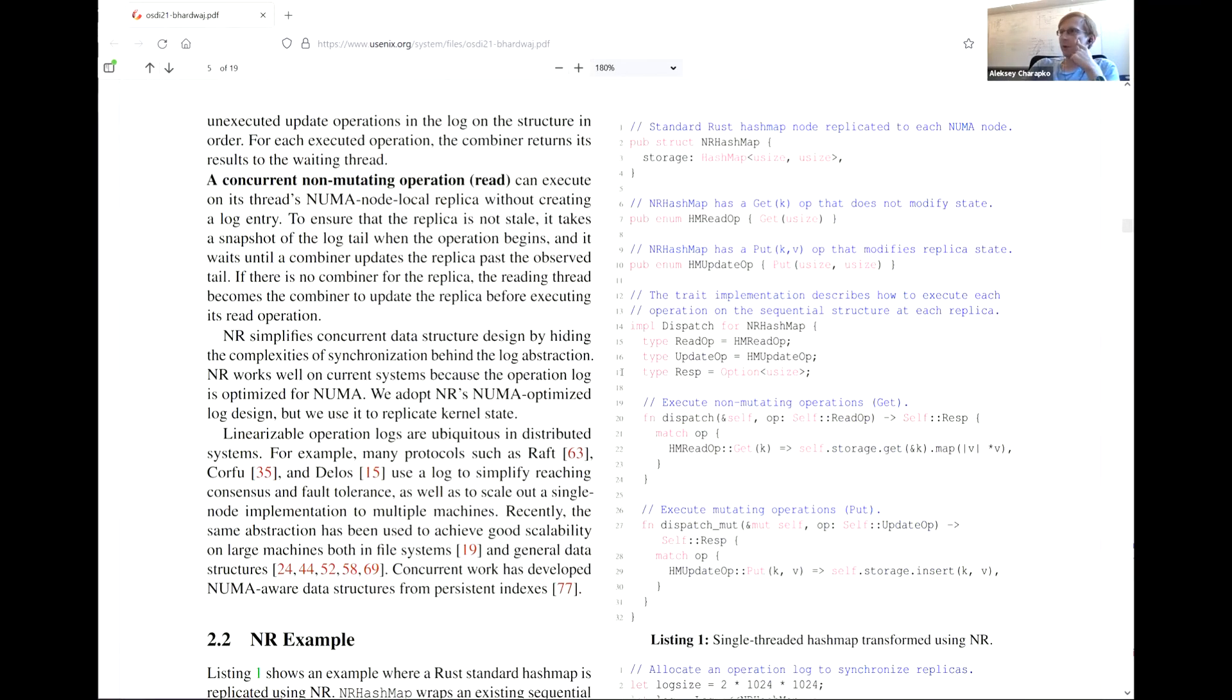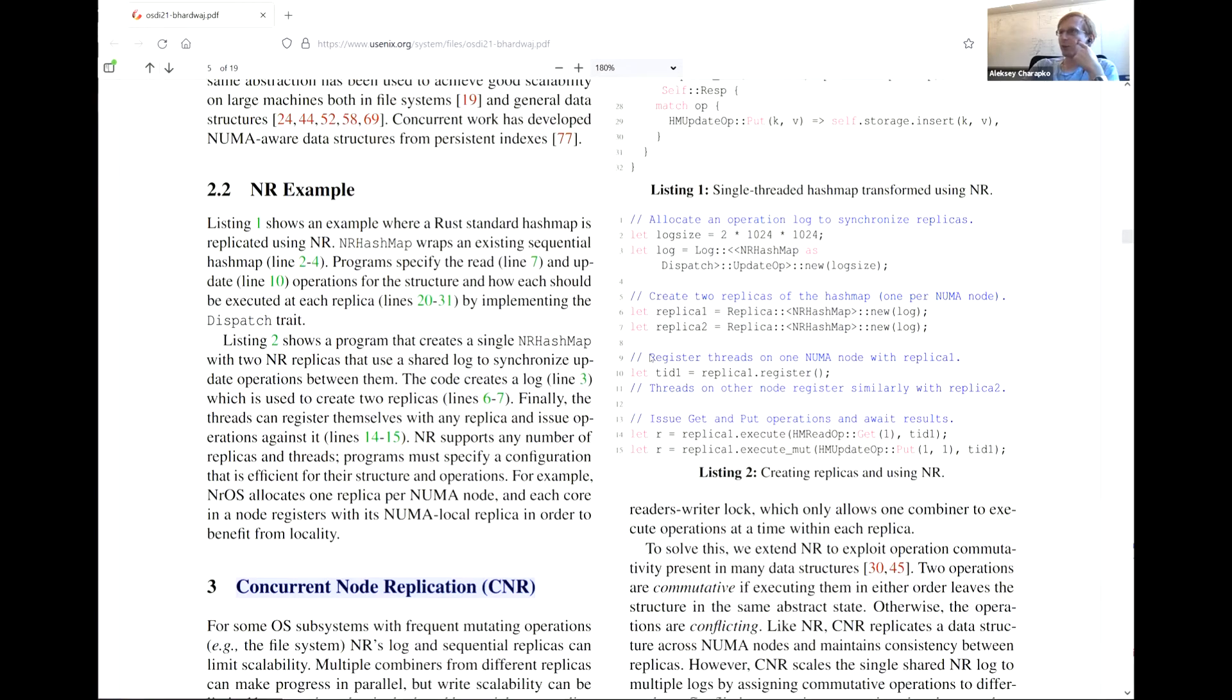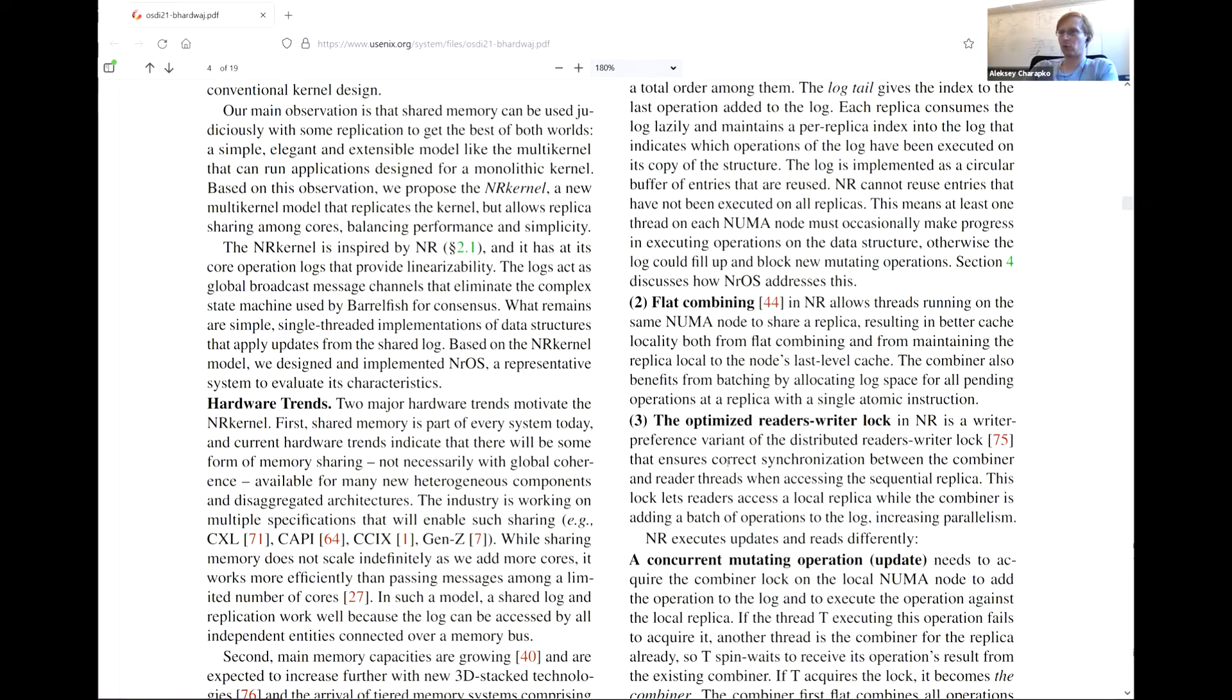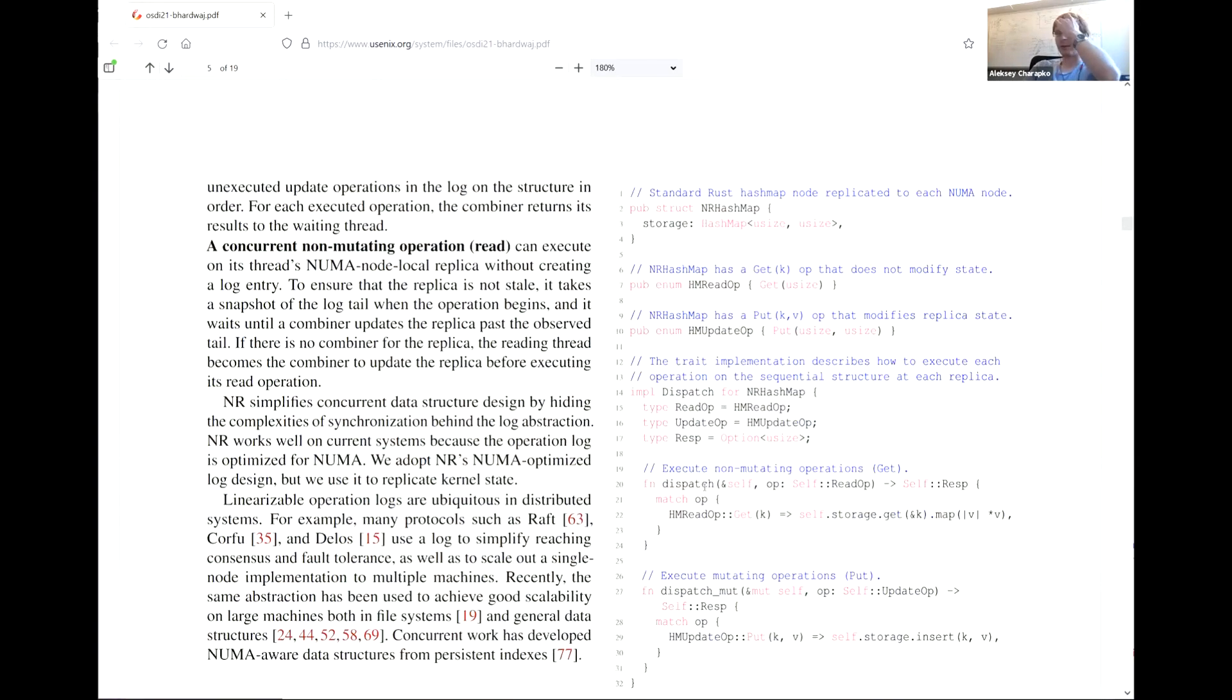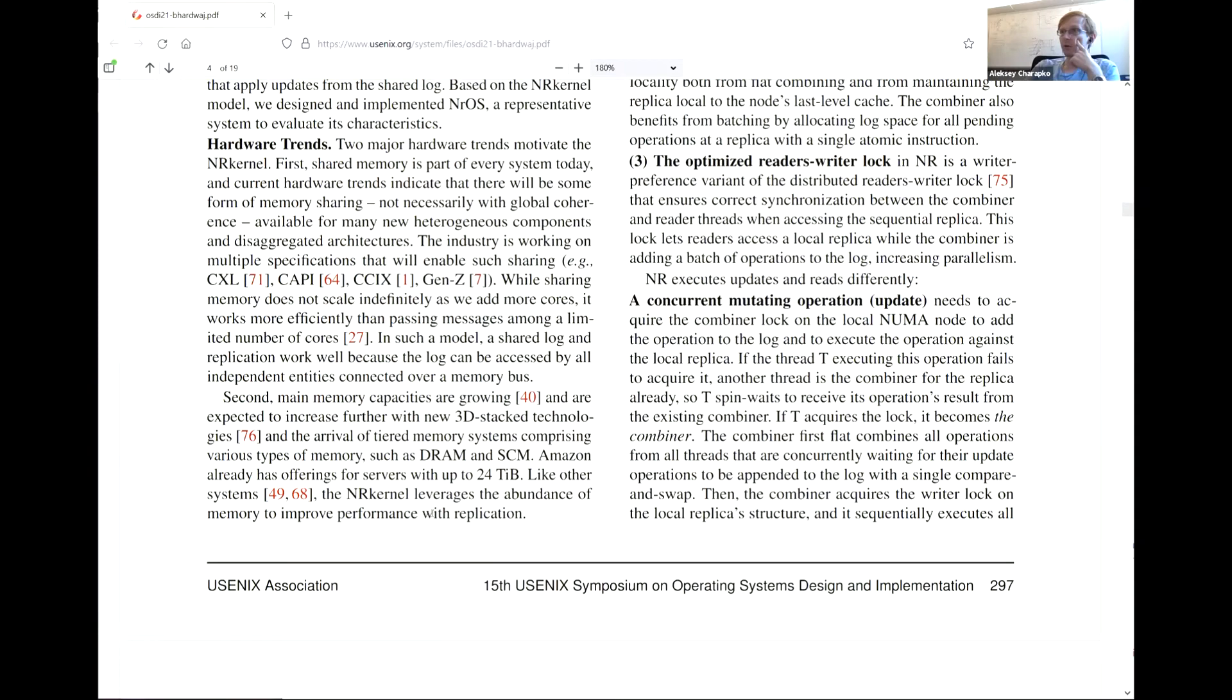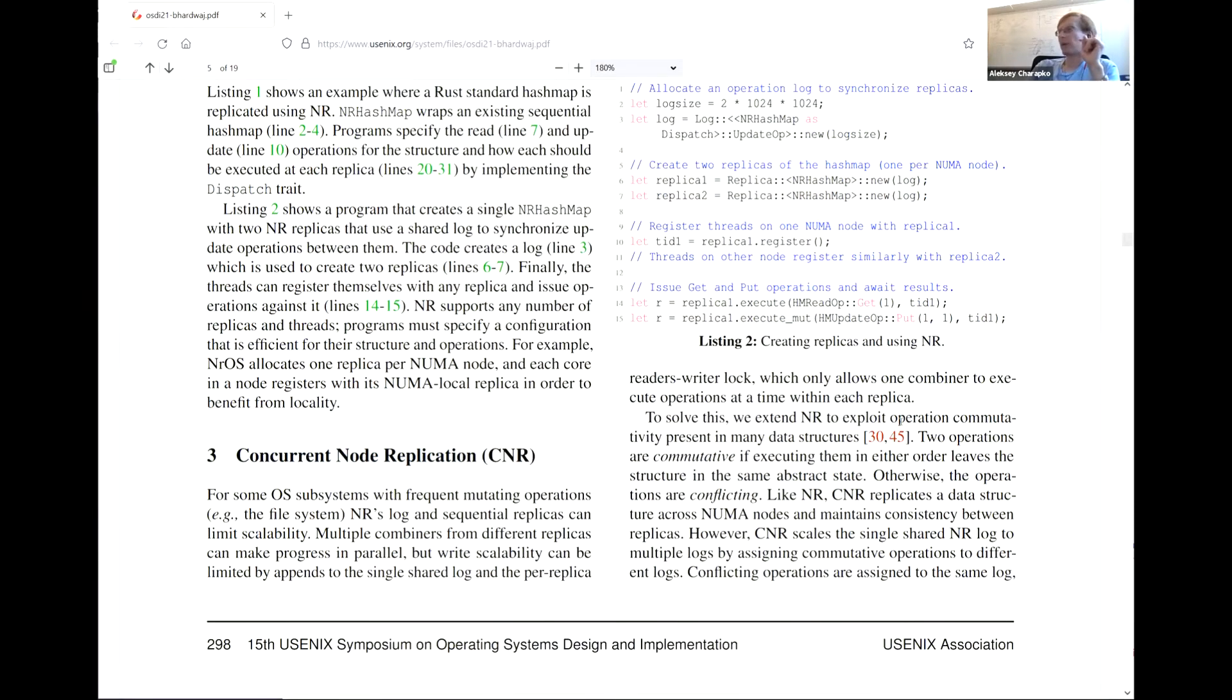They do go and explain a little bit more complications, like concurrent node replication. So, the node replication approach uses one shared log. So, it still has quite a lot of contention because only one combiner can get access to the shared log at a time. So, they say that in some examples, you may have operations that are commutative. It doesn't matter in which order they execute it back to each other. So, non-conflicting operations, essentially.